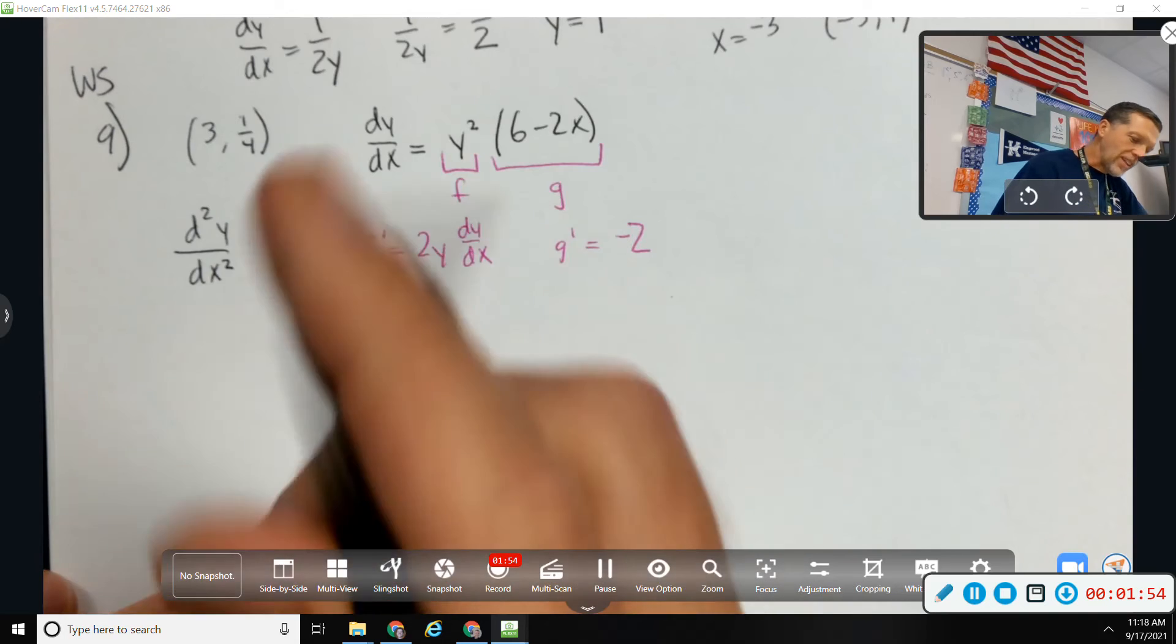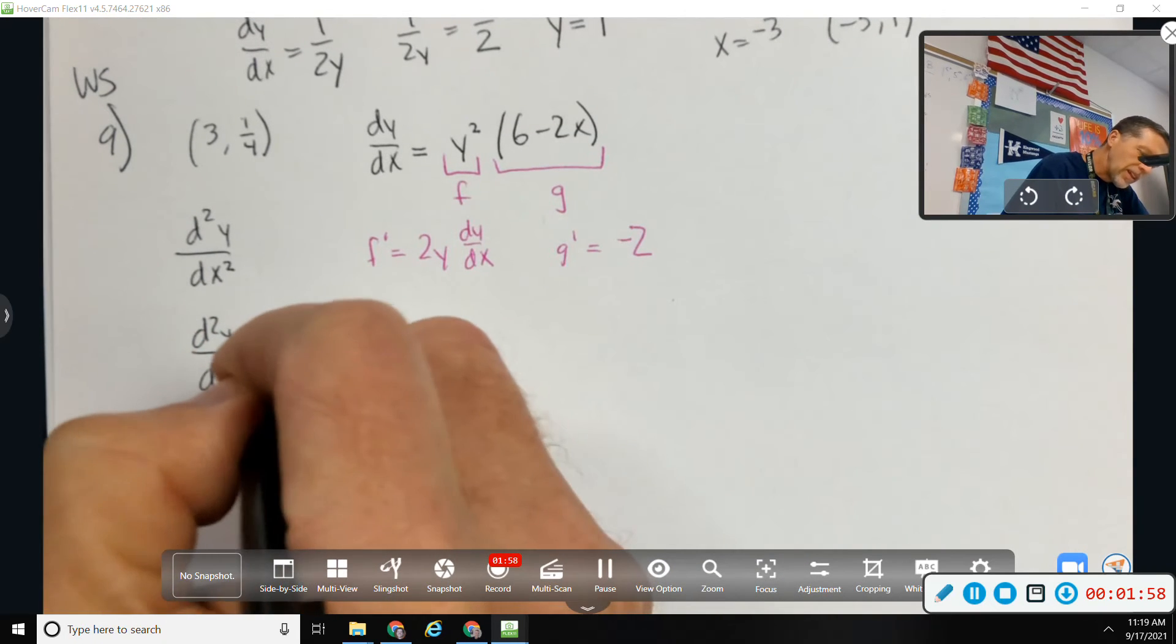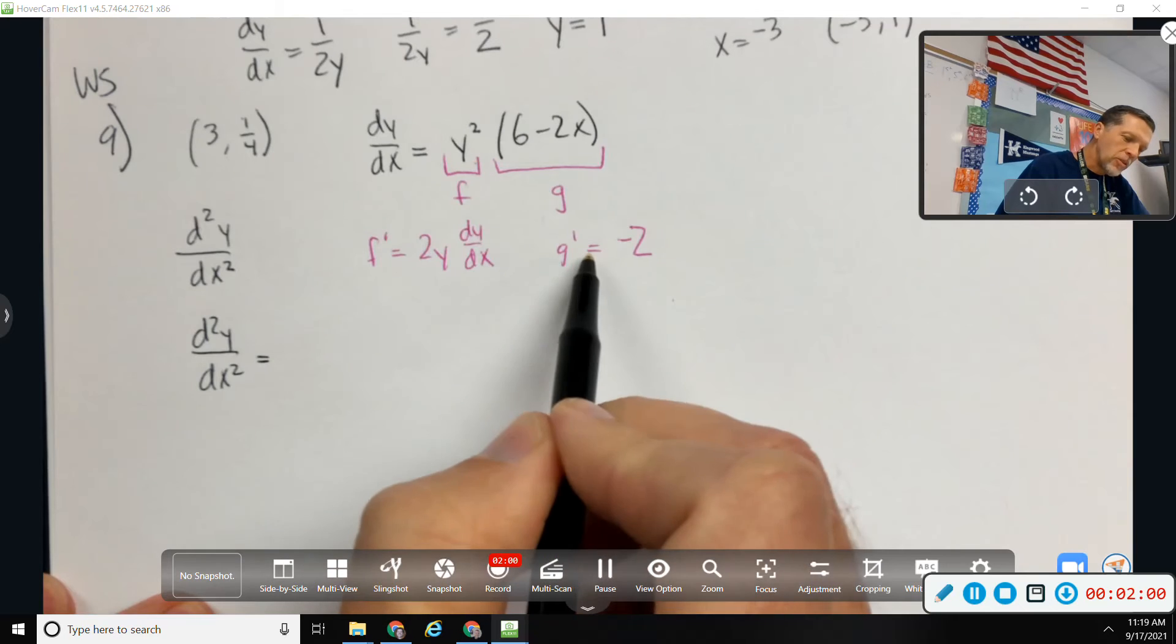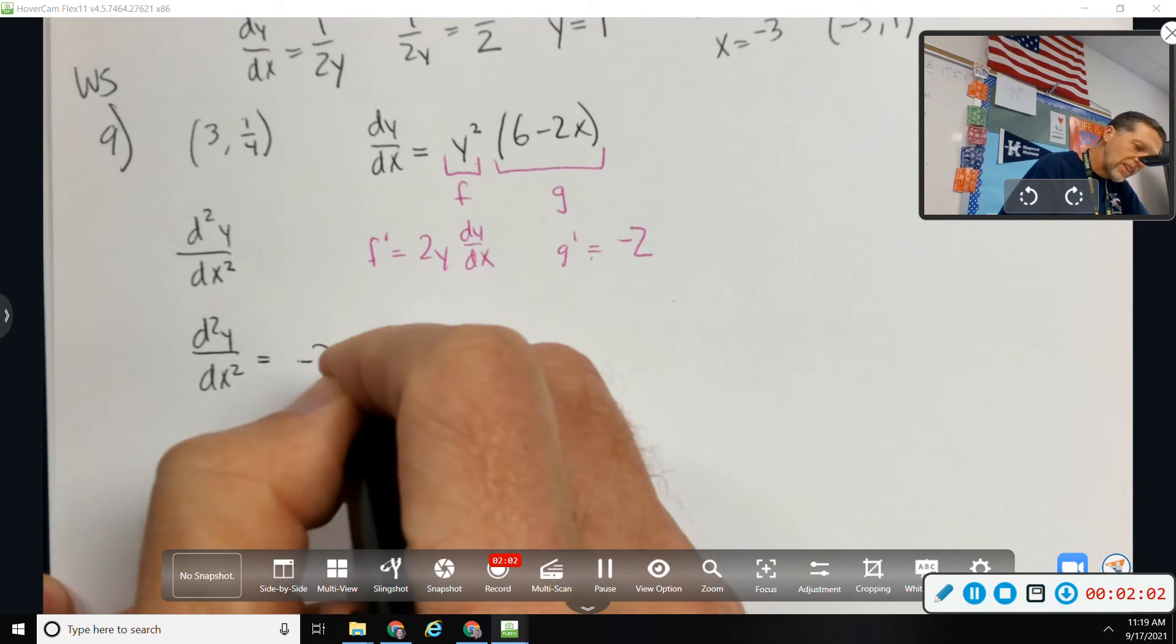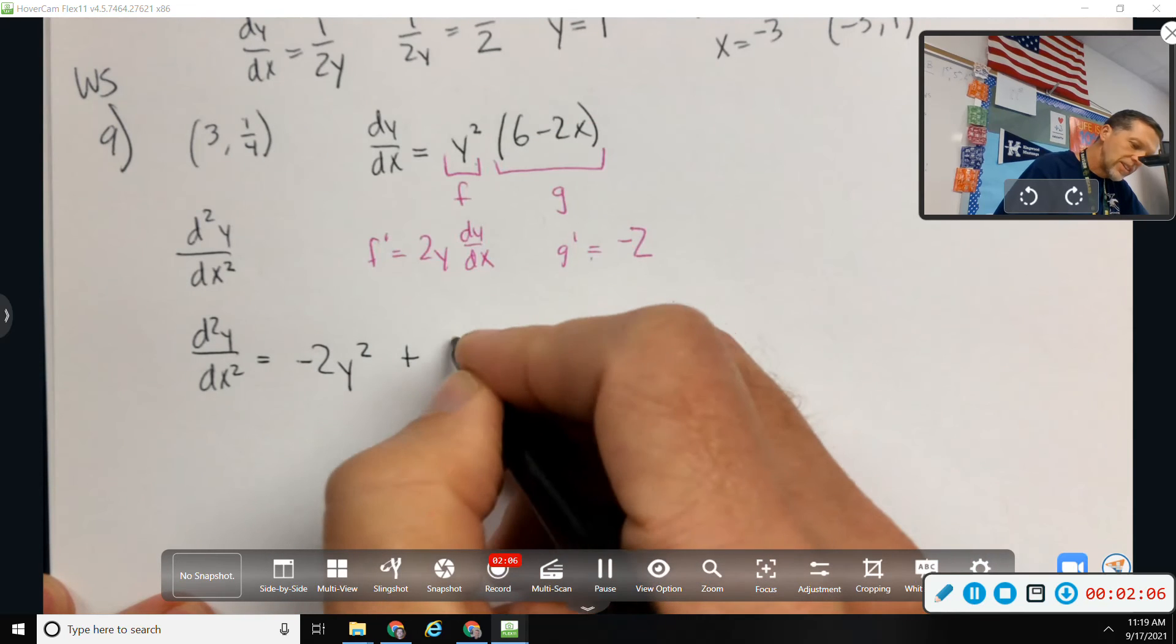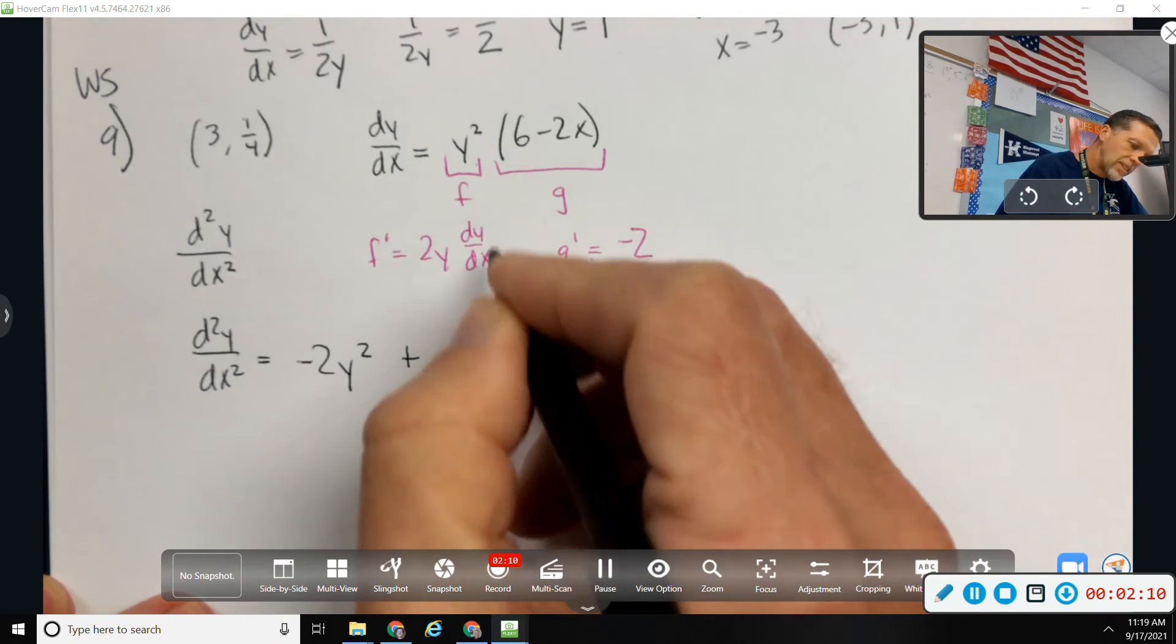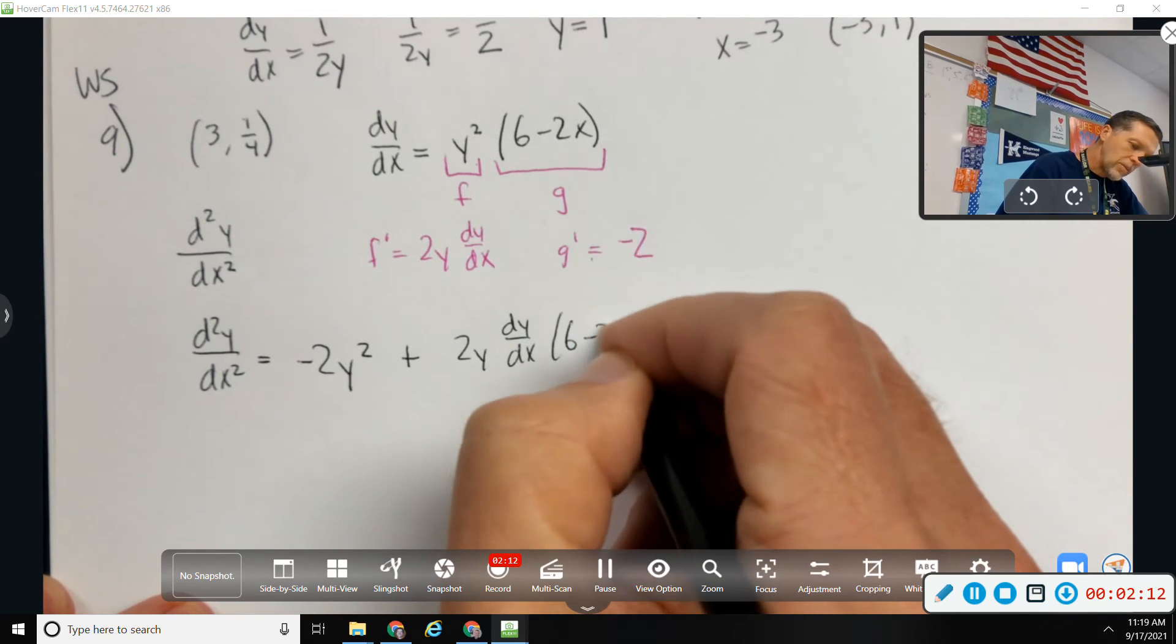So now I'll just put that stuff back together for the second derivative. So first one times derivative of the second one, plus the other way around. 2y dy dx times 6 minus 2x.